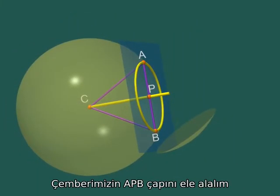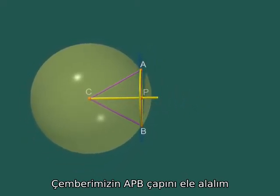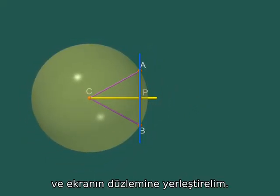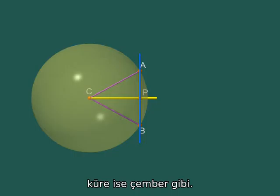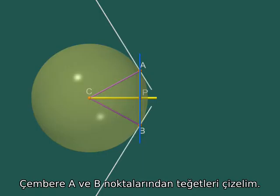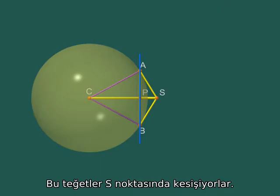Now let's look at a diameter APB of our circle. And let's place it in the plane of the screen. The blue plane appears as a straight line on the screen, and the sphere appears as a circle. Let's draw the tangents to the circle at A and B.